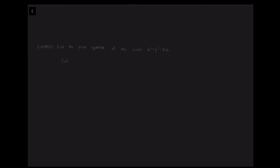For example, we want to find the polar equation of the curve X squared plus Y squared equals 2X. We substitute X equals R cos Theta and Y equals R sine Theta into the equation, giving R squared cos squared Theta plus R squared sine squared Theta equals 2R cos Theta. Factorizing out R squared, we get cos squared Theta plus sine squared Theta, which equals 1.